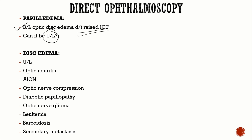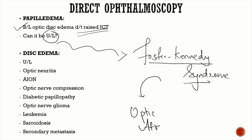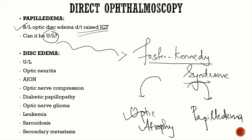Unilateral papilledema is seen in Foster Kennedy syndrome, caused by a frontal lobe tumor or olfactory groove meningioma. On the side of the tumor, you get optic atrophy; on the opposite side, raised ICT from the tumor causes papilledema. Because the affected side already has optic atrophy, it cannot undergo papilledema. Features of Foster Kennedy syndrome: unilateral anosmia, unilateral papilledema on the opposite side, and optic atrophy on the side of the tumor.